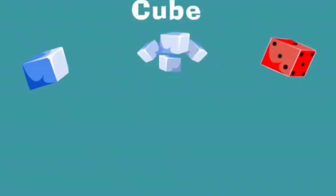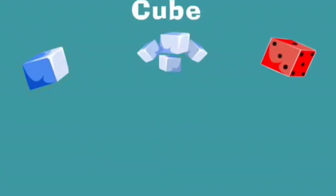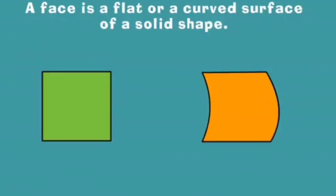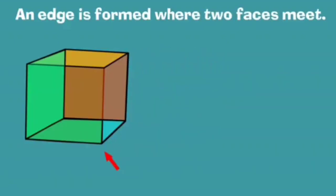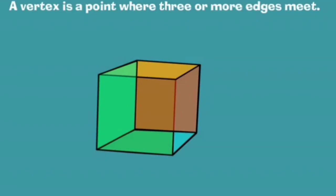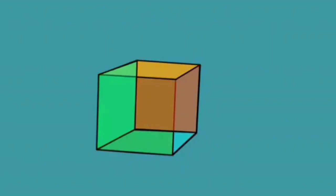What is a cube? Ice cubes, sugar cubes, and dice are all examples of a cube. Each face of a cube is a square. Remember, a face is a flat or curved surface of a solid shape. A cube has six flat faces, twelve edges, and eight vertices. A vertex is a point where three or more edges meet.